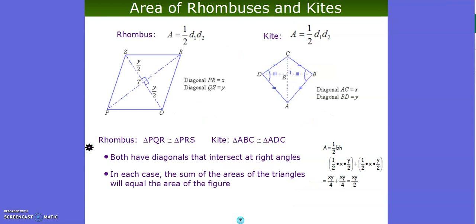We'll take a little bit closer detail into the rhombus and kite. The area is found by taking one half diagonal one times diagonal two. Both of these have diagonals that intersect at right angles. In each case, the sum of the areas of the triangles will equal the area of the figure. So if you wanted to, you could take each little triangle separately, find your right angle, find the area of each triangle, and add them together.